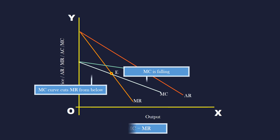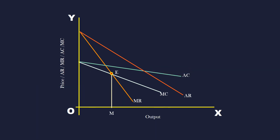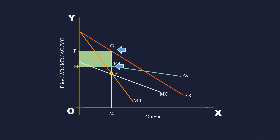Monopoly output is M and monopoly price is P. Average revenue MG is greater than average cost MF. The firm is earning a supernormal profit represented by the area PGFH.